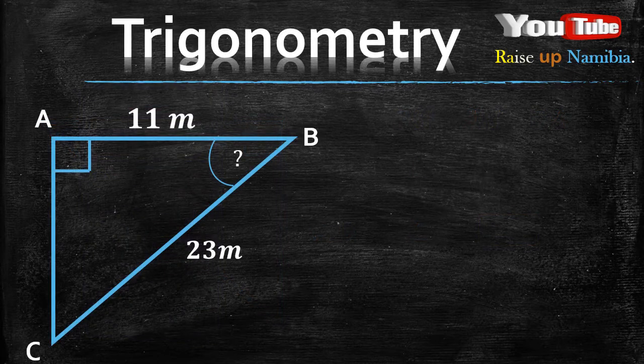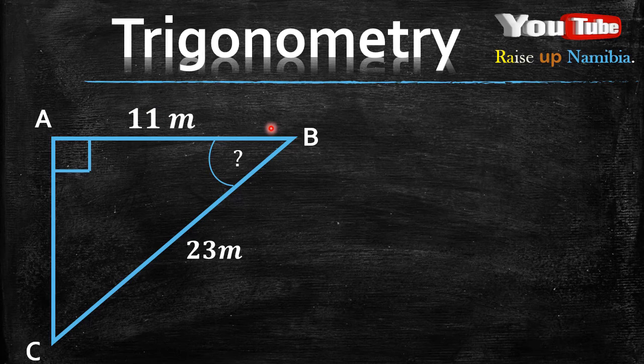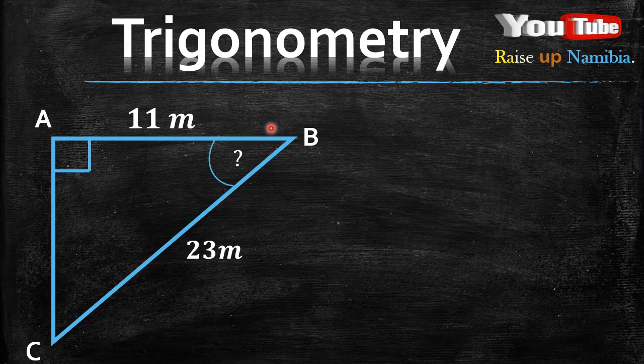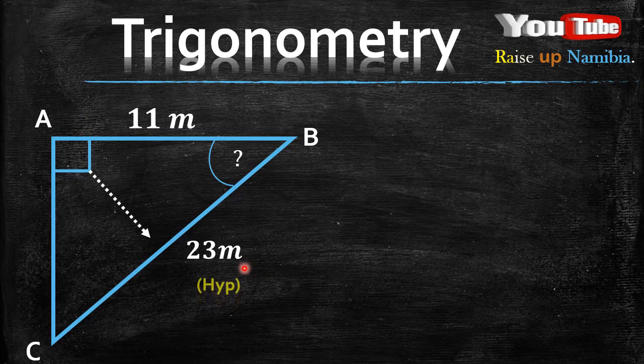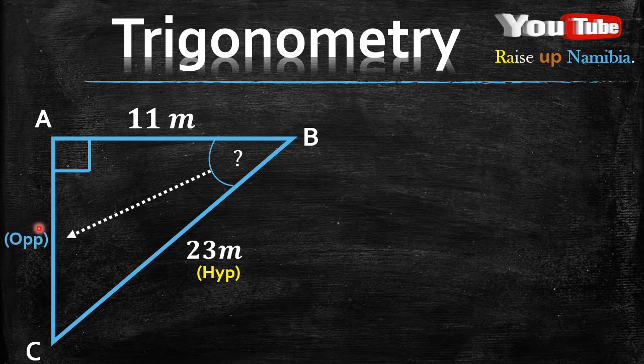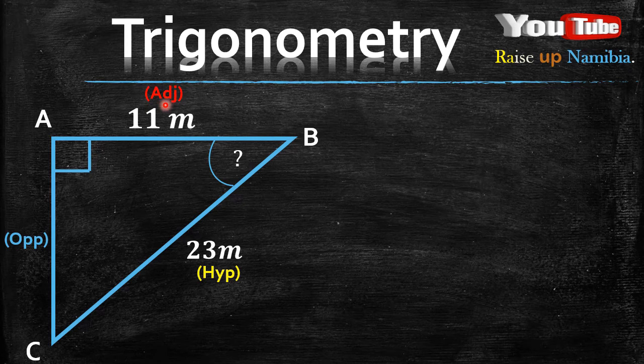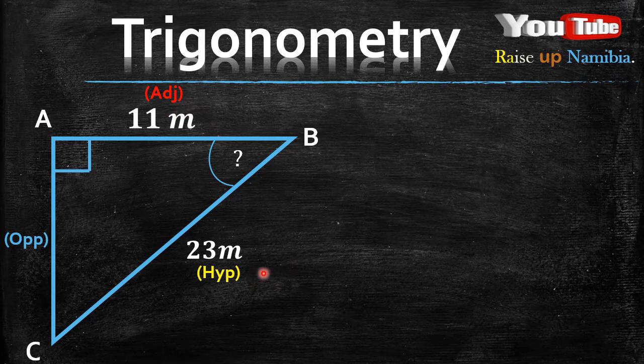Let's check out another example. I'm going to give you 10 seconds to give it a shot and see if you can get the correct answer. Feel free to pause the video. So the first thing you want to do is label the sides. Which side is our hypotenuse? It will be this side. Which side is our opposite? It will be this side. Which side is our adjacent? It will be on top here. Now which one is not given a figure? Our adjacent is 11, our hypotenuse is 23. We don't have an opposite.